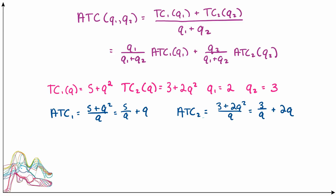To use the second version of the formula, you need the average total cost functions for each output, which you get by dividing each total cost by Q. Average total cost for the first output is TC1/Q = 5/Q + Q, and average total cost for the second output is TC2/Q = 3/Q + 2Q.